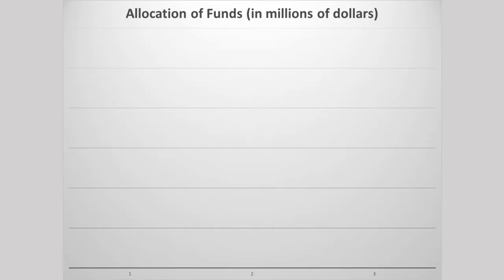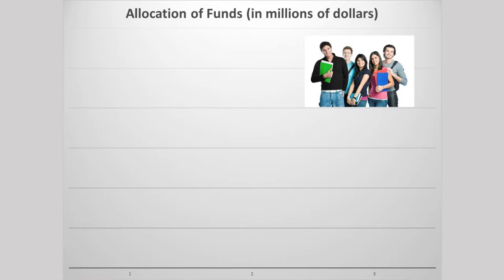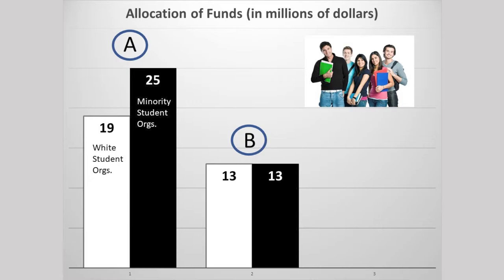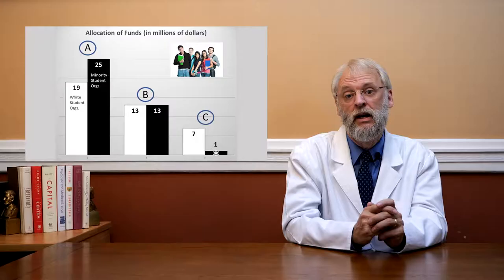In one study, 186 white college students were charged with a hypothetical task. They were told that the state regents would be donating a sum of money to support both white and minority student organizations around the state. The allocation of funds between the two types of organizations had not been set, and the white students were asked to choose from several possibilities. At one extreme, subjects could select an option in which both types of organizations would be highly compensated, but the white organizations would receive somewhat less than the minority groups. The middle choice was that both groups would get much less funding, but the amount would be equal — $13 million apiece.